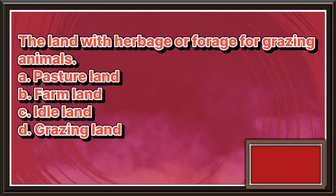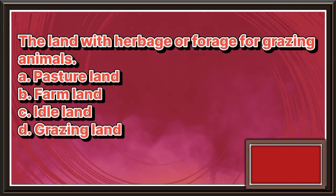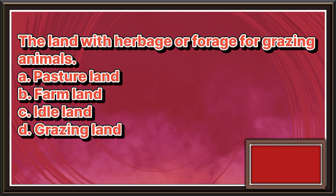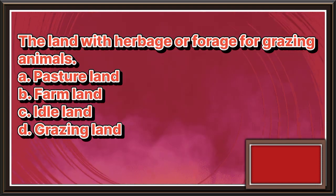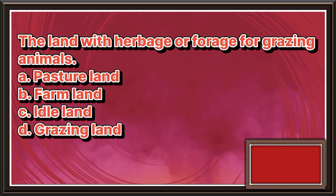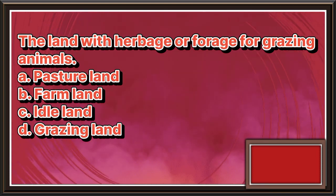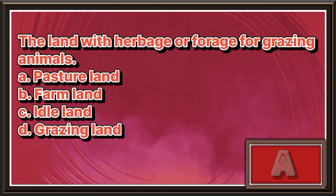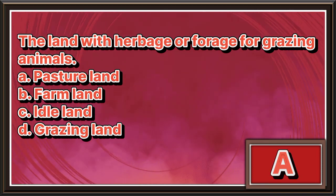The land with herbage or forage for grazing animals. A. Pasture land. B. Farm land. C. Idle land. D. Grazing land. The answer is letter A.